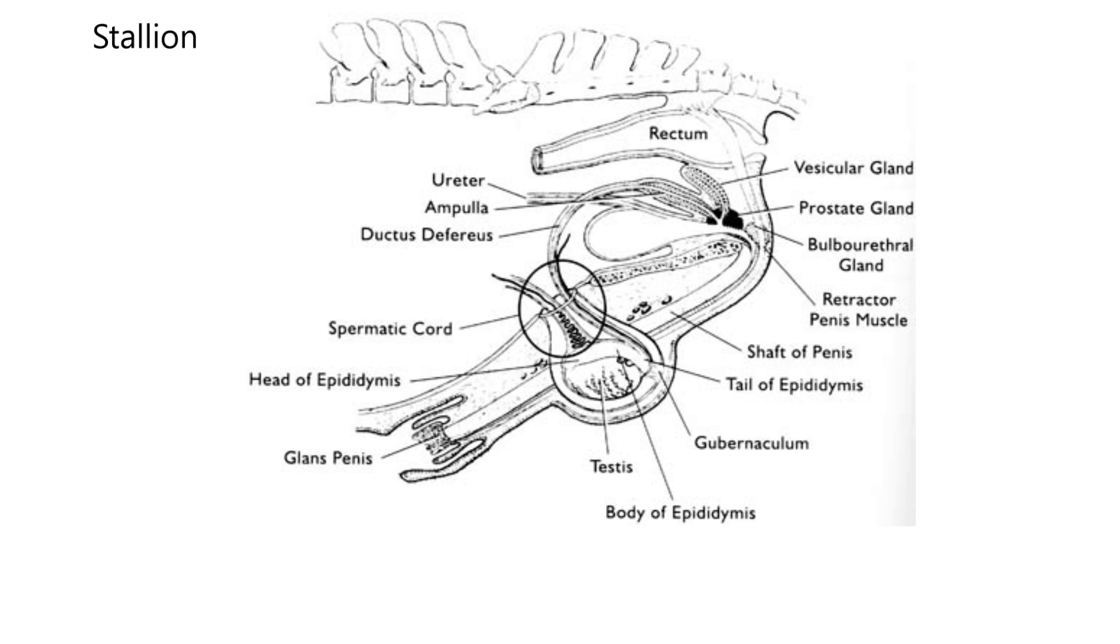There's the testis, body of the epididymis, tail of the epididymis, the shaft of the penis. They've got some other glands beside the prostate labeled. There's the prostate, but look at vesicular gland, bulbo-urethral gland, and then the ampulla. I want you to remember those four: ampulla, vesicular, prostate, and bulbo-urethra. Those are all called accessory sex glands.